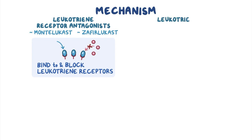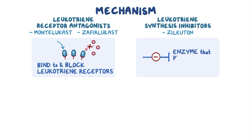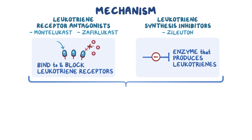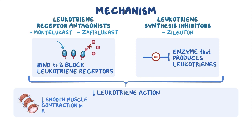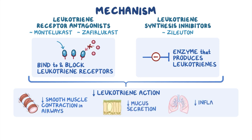On the other hand, leukotriene synthesis inhibitors, such as zileuton, inhibit the enzyme that produces leukotrienes. Regardless of the exact mechanism, the net effect is decreased leukotriene action, leading in turn to decreased smooth muscle contraction in the airways, decreased mucus secretion, and decreased inflammation.